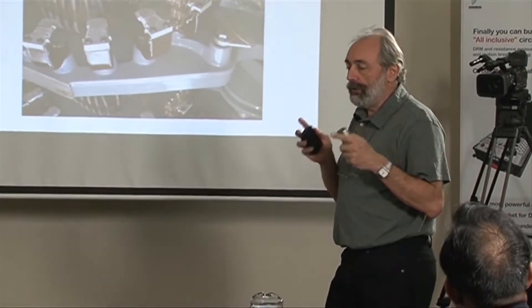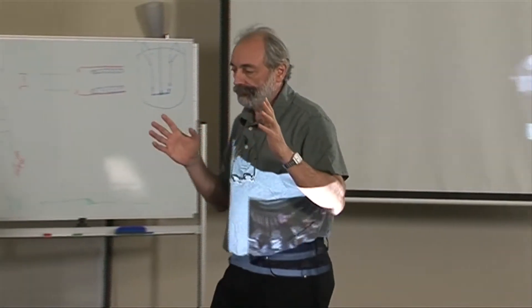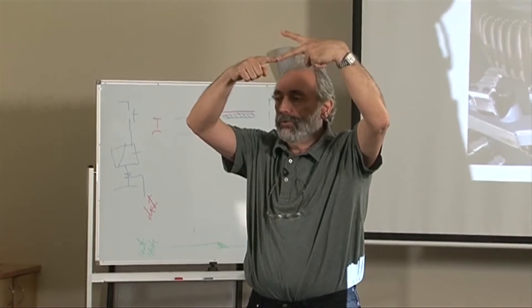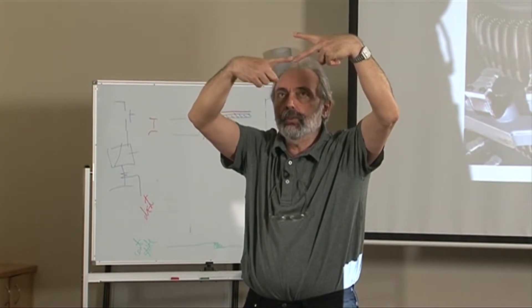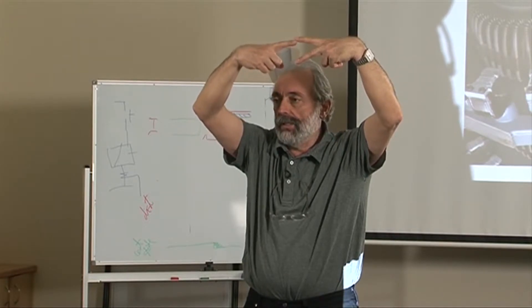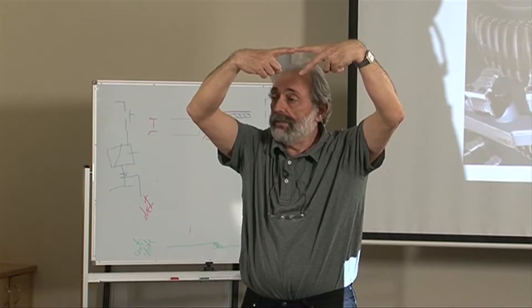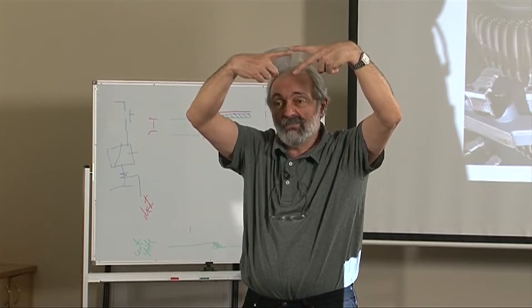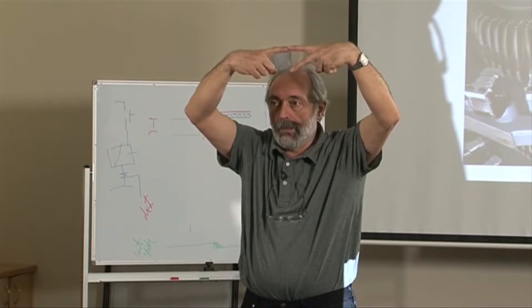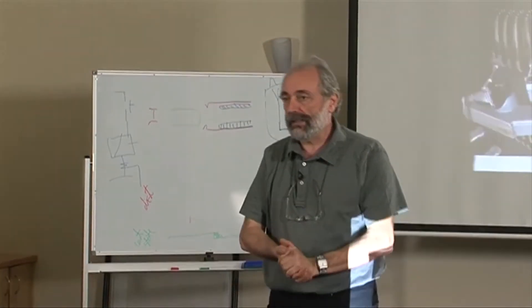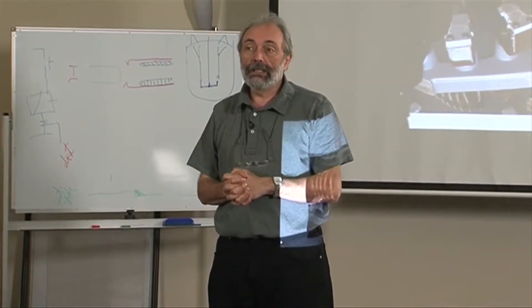So when you do a tap changing process you need to go from position 1 to position 2. So if you had your contact on position 1 and you just say let's go to position 2, what you do is you open the circuit. And on load tap changer means that the transformer has to carry a full load. So if it opens it's not going to work. So how do you change from one position to another? Well the smart guy was Dr. Janssen who patented the process. It was called the Janssen switch for many years in 1927.